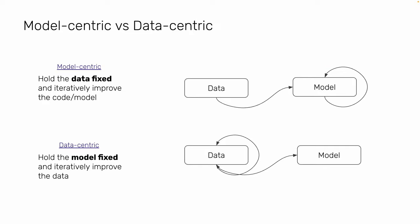Model-centric means you want to improve the model while keeping the data fixed — you iteratively improve your code or model by tweaking parameters. In data-centric, you hold the model fixed and keep iteratively improving the data. A lot of work in ML is model-centric, but only a little is data-centric. I suggest focusing more on data-centric — keep the model, but focus on data. This is also advocated by Andrew Ng, which we really experience day-to-day as data scientists.